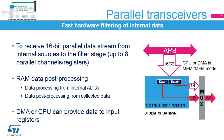Parallel transceivers provide parallel inputs from internal data sources, such as memory buffers. They are usually used for fast hardware filtering of internal data from the ADC or data collected from a communication peripheral. Data can be written to the DF-SDM parallel input registers by the CPU or the DMA controller configured in memory-to-memory transfer mode.